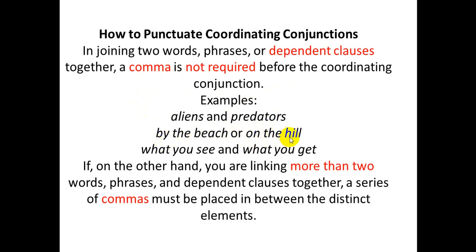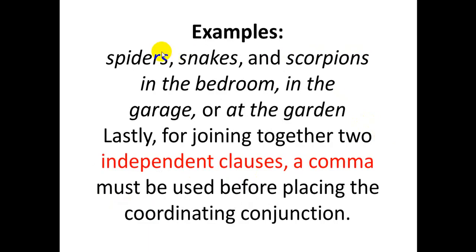Examples of comma usage: 'By the beach or on the hill.' 'What do you see and what do you get?' When joining more than two items — like 'spiders, snakes, and scorpions' or 'in the bedroom, in the garage, or at the garden' — we use a comma because there are more than two elements.